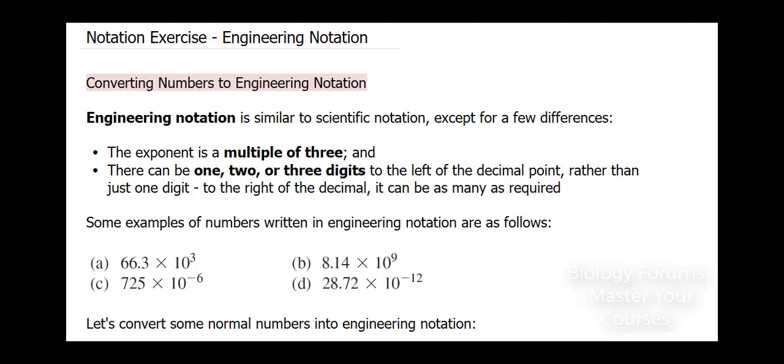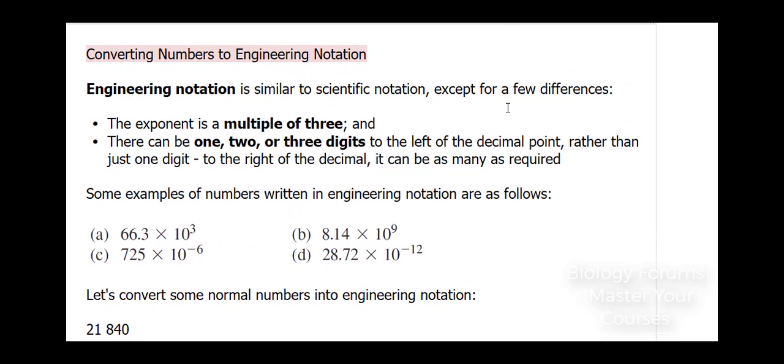These numbers below are numbers written in engineering notation. Here we have 66.3 times 10 to the power of 3. So this is an engineering notation because here you have two things that are satisfied. You have two numbers to the left of the decimal and this is a multiple of 3, 10 to the power of 3 is a multiple of 3.